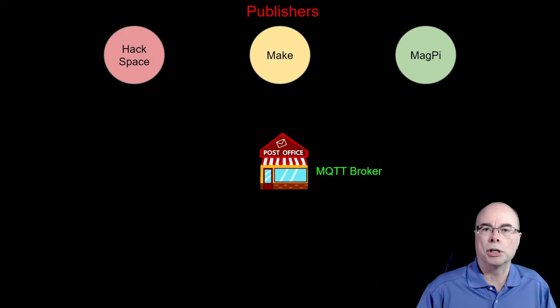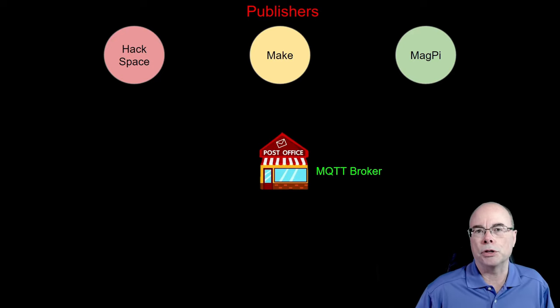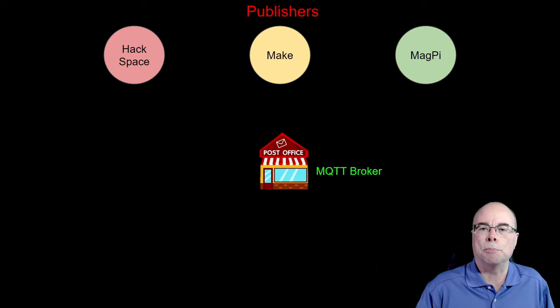At the heart of MQTT is the MQTT broker, generally referred to as being like a post office — it handles the routing of all MQTT messages. On one side we have publishers, which are entities that publish information. As an example, I've used some magazines — Hackspace, Make, and Magpie — as publishers.